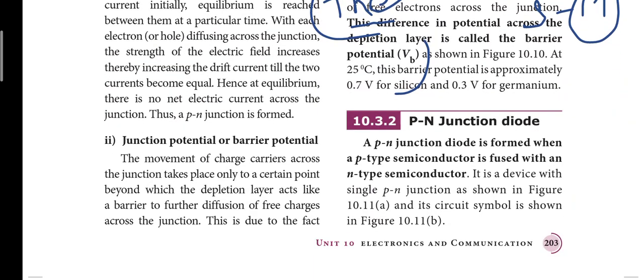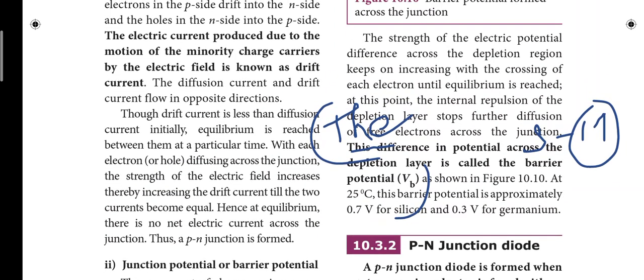Next, page number 203. On the right side, the difference in potential across the depletion region is called barrier potential Vb. That is the 17th short answer.